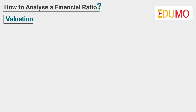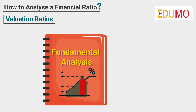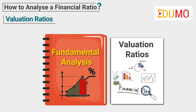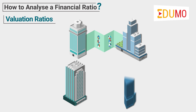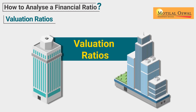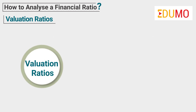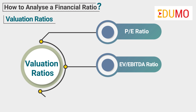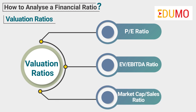Fourth is the valuation ratios. Valuation ratios are one of the most important ratios used in fundamental analysis. They enable us to get an idea of how the market is valuing the company with respect to its peers. Valuation ratio is a pure comparative ratio as it can only be assessed when compared with an immediate peer or the broader sector. Examples include PE ratio, EV by EBITDA ratio, and market cap by sales ratio.